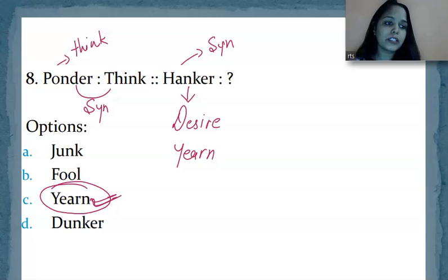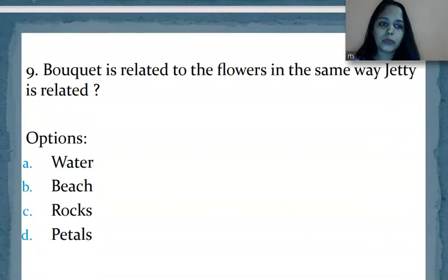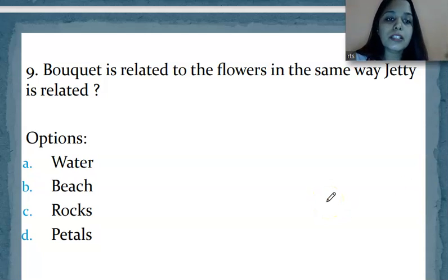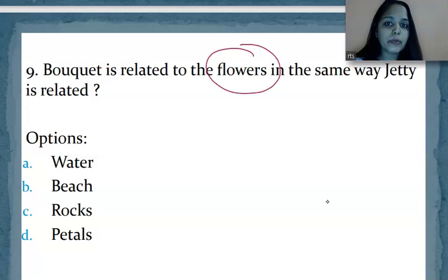Now move on to the next question. Question number nine or question number four of the day. The question is asking: bouquet is related to flowers in the same way jetty is related to which one? See, bouquet means what? When you take many flowers together and group them together, tie them together, that is called what? A bouquet. Many flowers brought together and tied, that is called a bouquet.